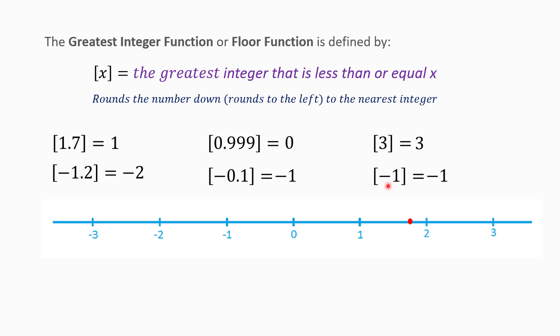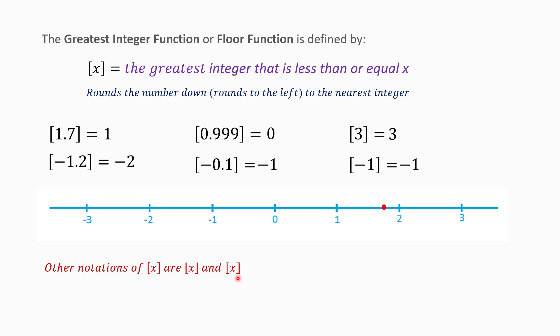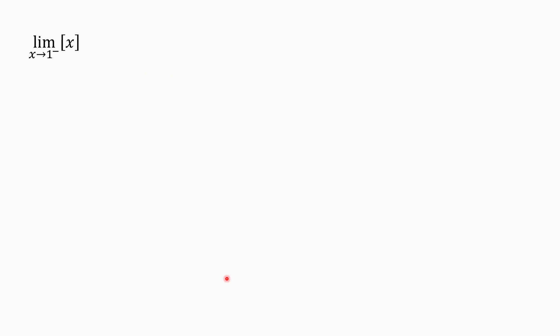The typical notation for the greatest integer function uses square brackets, but in some textbooks it is shown by different notations. You should get familiar with these notations as well. Now let us start our discussion about the limit of the greatest integer function.